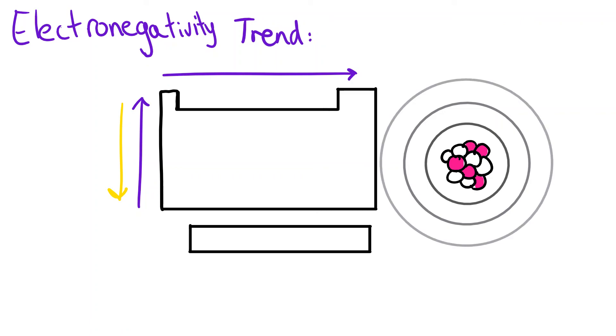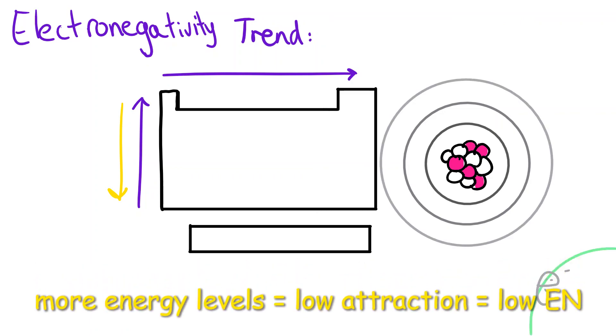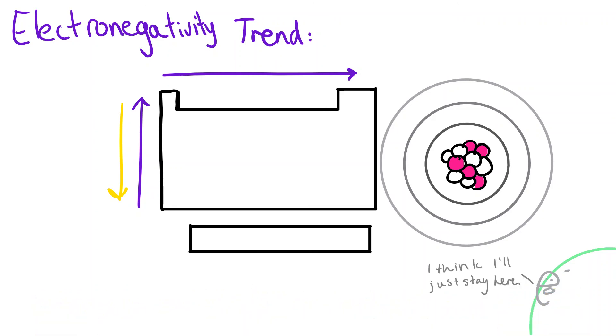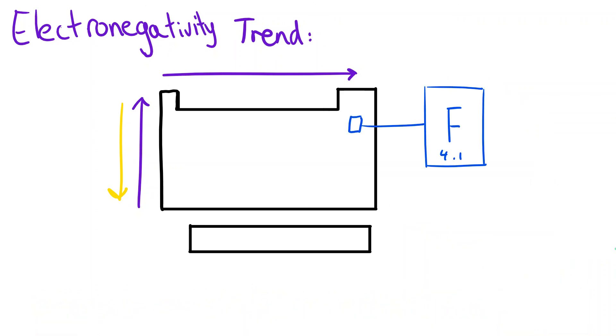As a result, the power to attract electrons when bonding is low. In the top right of the periodic table, fluorine is the most reactive element and gains electrons easily when bonding. This is because it has a high electronegativity.